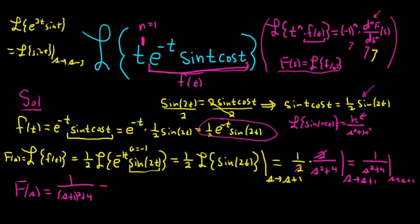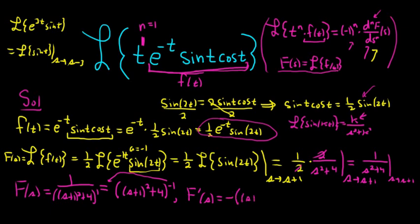To differentiate big F, we write the denominator upstairs as s plus 1 squared plus 4 to the negative 1. Now we differentiate using the chain rule: bring the negative 1 to the front, subtract 1 to get negative 2, leave the inside alone, then multiply by the derivative of the inside, which gives 2 times s plus 1 times 1. The derivative of 4 is 0.